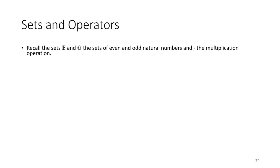To get started, I'm going to refresh something we talked about in an earlier video. Let's remind ourselves of the set of even numbers and the set of odd numbers. We specifically looked at them as natural numbers, but we can also extend that to the integers. We also looked at these two sets with respect to a certain operator - the multiplication operator. What happens if we take two even numbers and use this operator on them? I chose two because the multiplication operator is a binary operator, which means it takes two arguments.